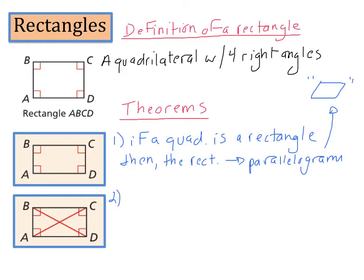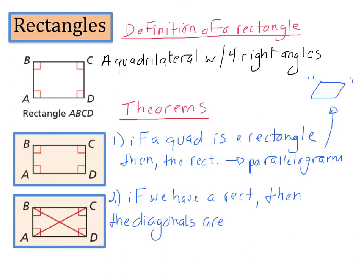The second theorem we're going to discuss is: if we have a rectangle, then the diagonals are congruent. So in this image, we say that segment BD is congruent to segment CA. The first theorem says that if a quadrilateral is a rectangle then it is a parallelogram. The second theorem says that if we have a rectangle then the diagonals are congruent.